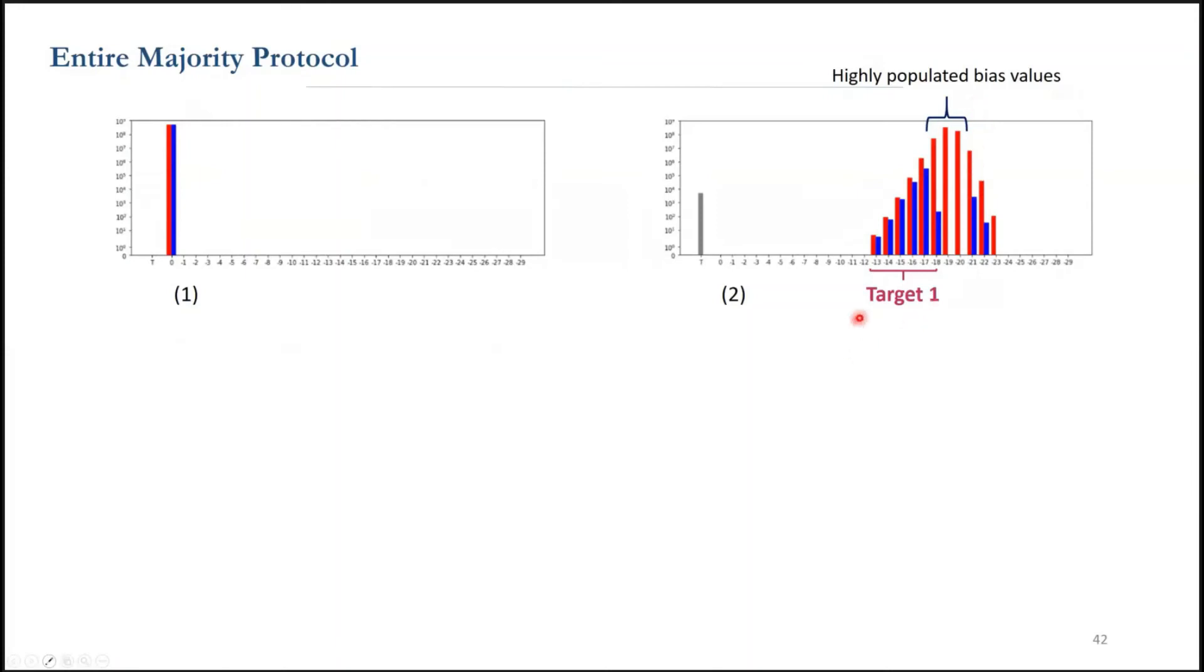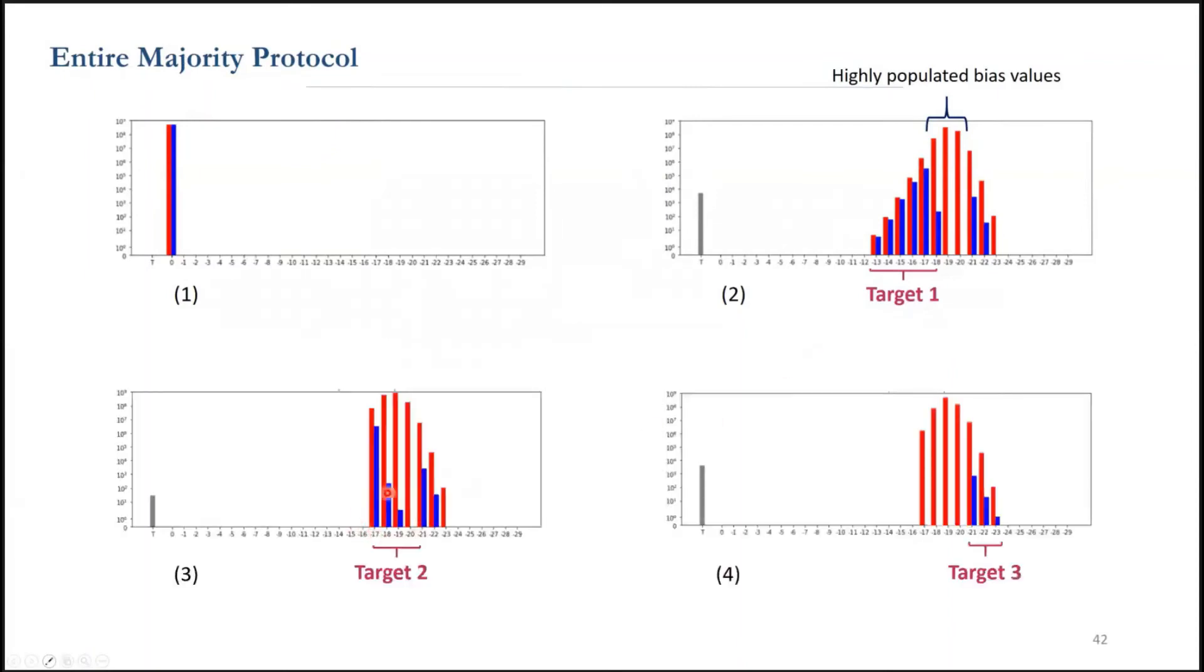Our first target is to eliminate the minorities who have larger bias values. Then we reach the point that only minorities with medium and small biases are left. So our second and third targets will be these two blue groups.